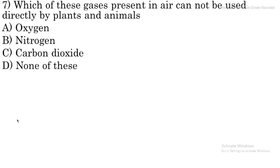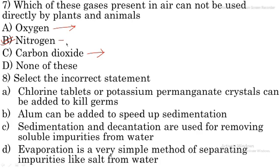Question number 7: which gas present in air cannot be used directly by plants and animals? Nitrogen cannot be used directly by plants and animals. Oxygen and carbon dioxide can be used directly, but nitrogen can only be used in the form of compounds. So option B is the right option for question number 7.